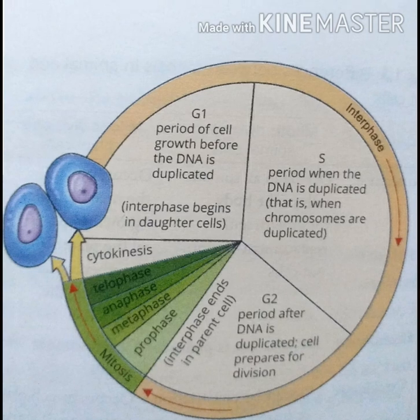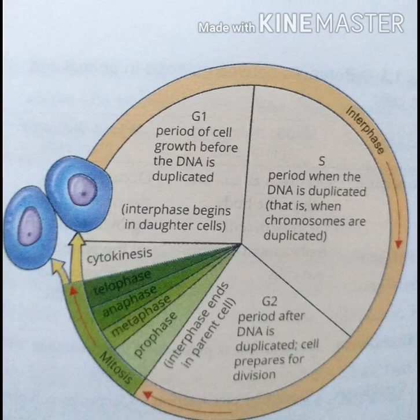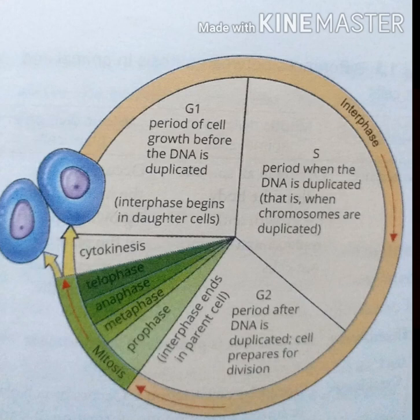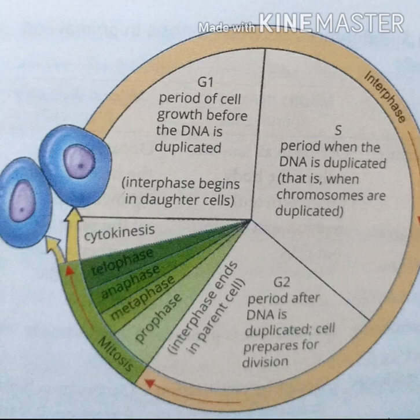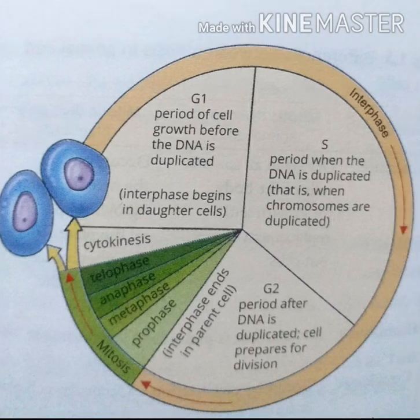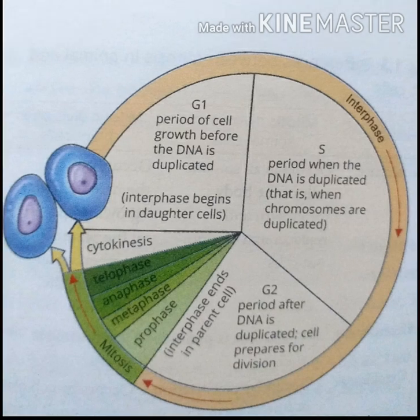When we move towards the cell cycle, the first stage is interphase, which itself has three phases. The first is the first growth phase (G1). In G1, RNA and protein are synthesized, the volume of the cytoplasm increases, and mitochondria and chloroplasts divide — noting that chloroplasts are present in plant cells only, not in animal cells.